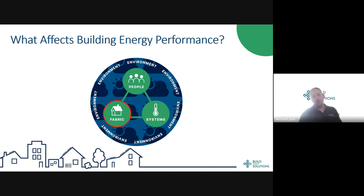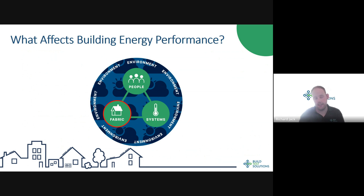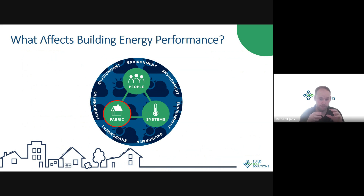I want to start with some context: what in general affects how much energy will be used in a building. I think there are three key tenets. The first is people — if you have a higher set point or use more appliances, you're going to use more energy. The second is the systems — a highly efficient heating and ventilation system means less energy and less carbon. The third, which is what this is really about, is the fabric thermal performance of the building itself.